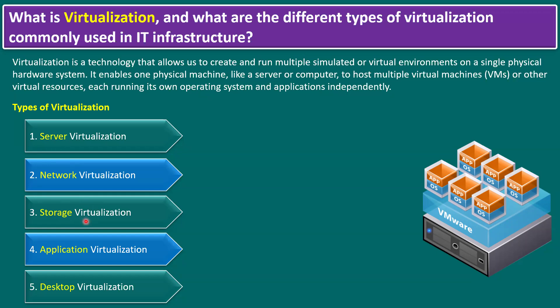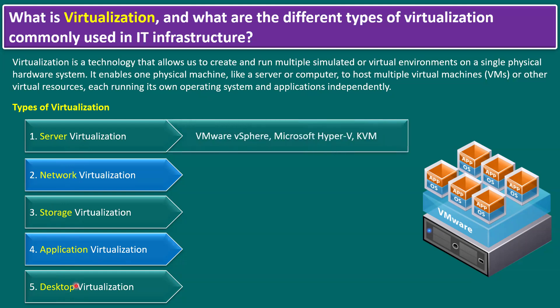Application virtualization means instead of running applications directly on a physical server or virtual machine, we can manage them from centralized controls. Desktop virtualization is similar — it is a software-defined desktop environment, just like network, storage, and application virtualization. Let me show you examples for each type.